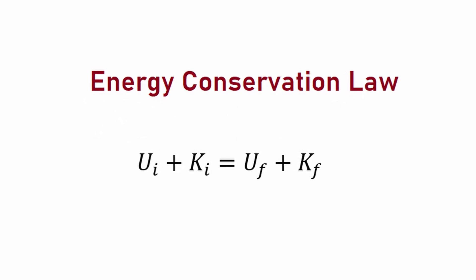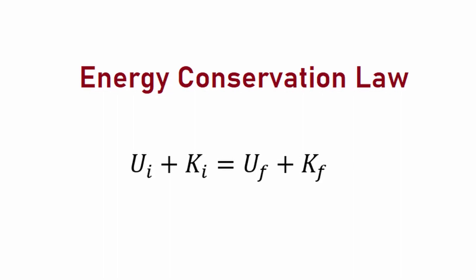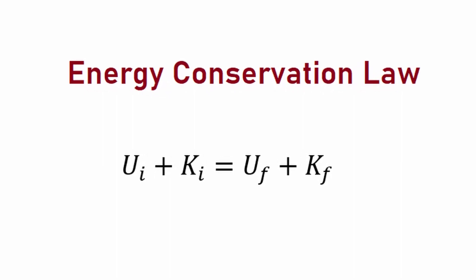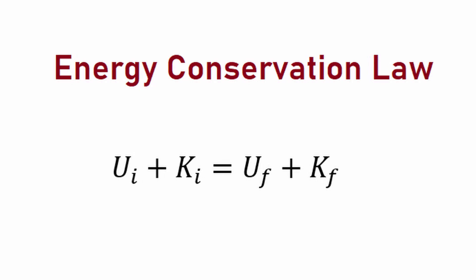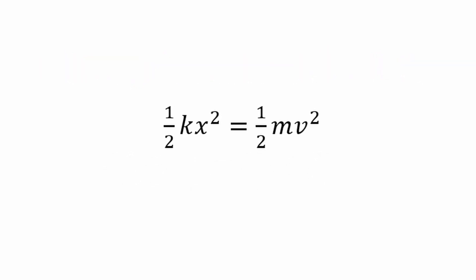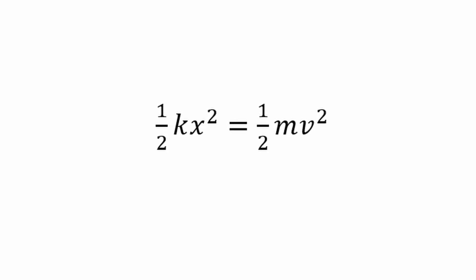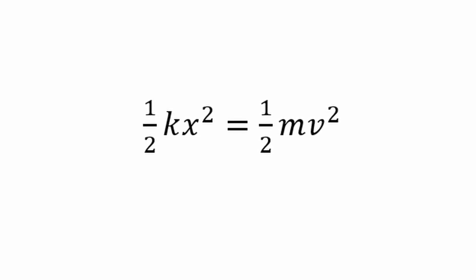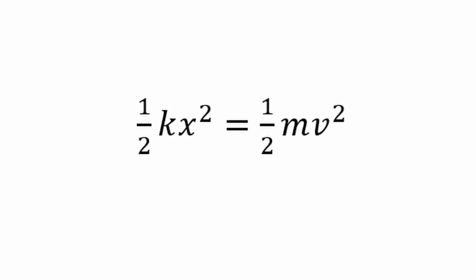In the experiment, there will be no external forces exerting on the object. So we can say the initial mechanical energy will be equal to the final mechanical energy. If we substitute the expressions we have into the energy conservation law, we get this equation. Now we have only the speed. Let's move on to the experiment.